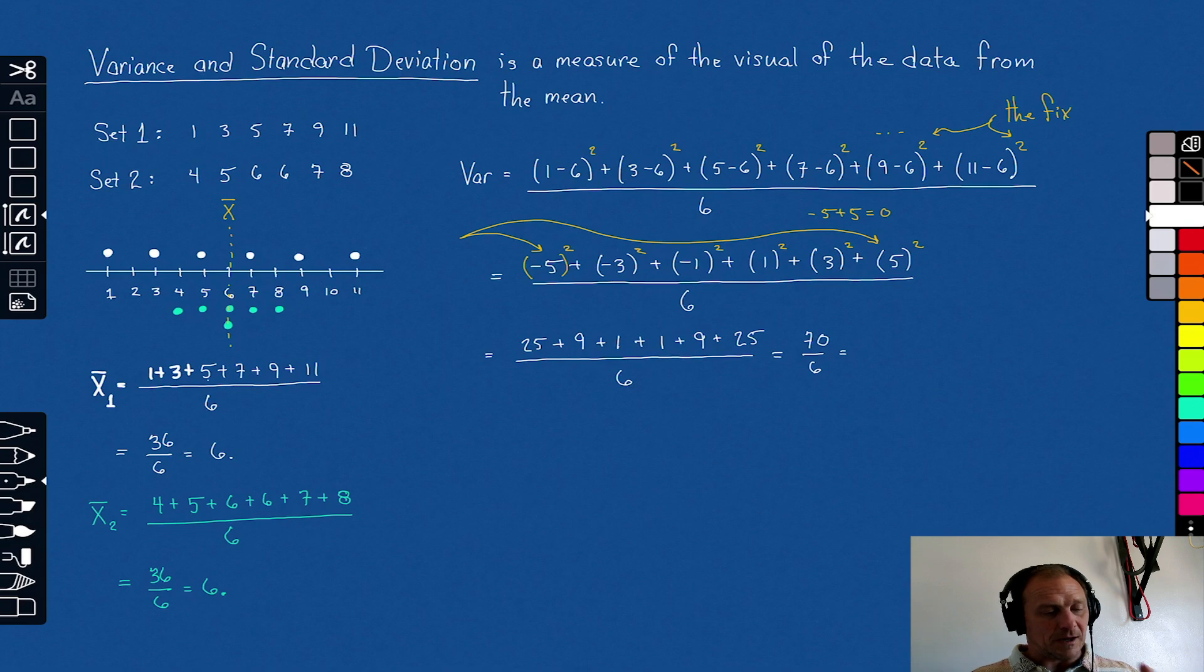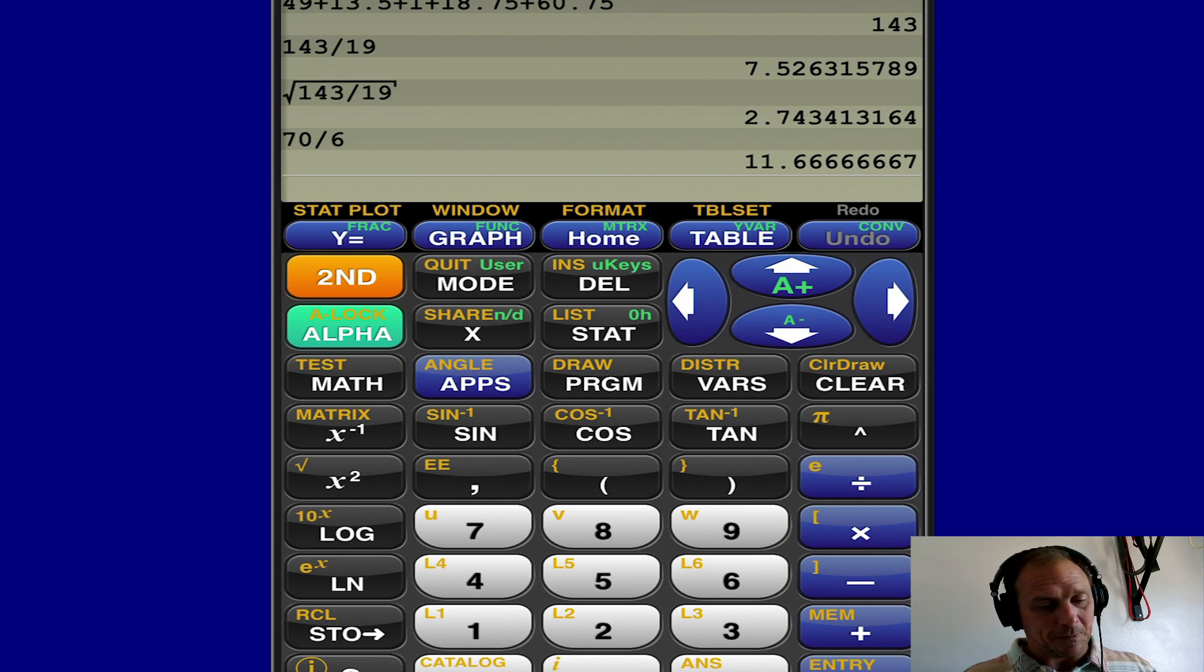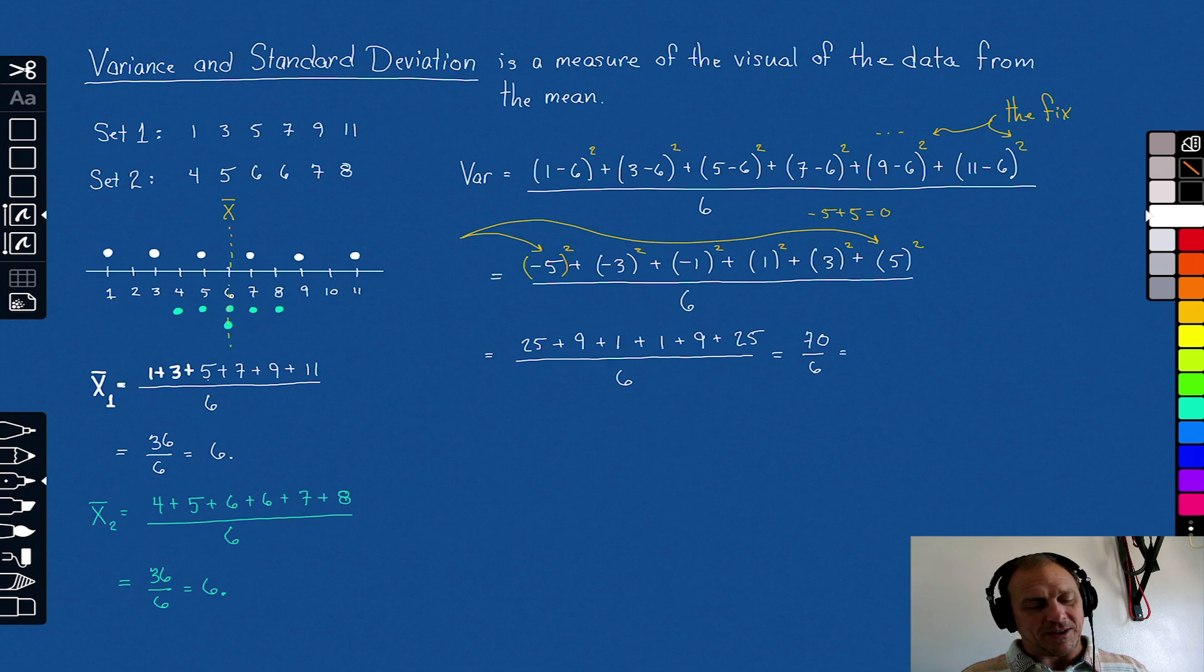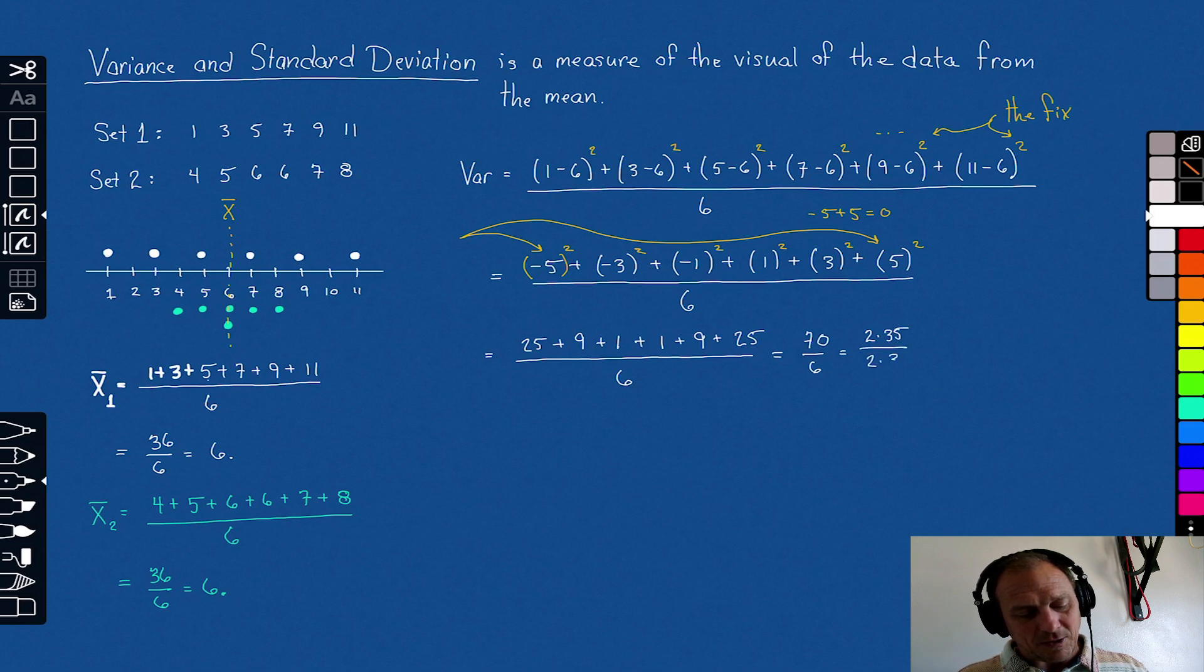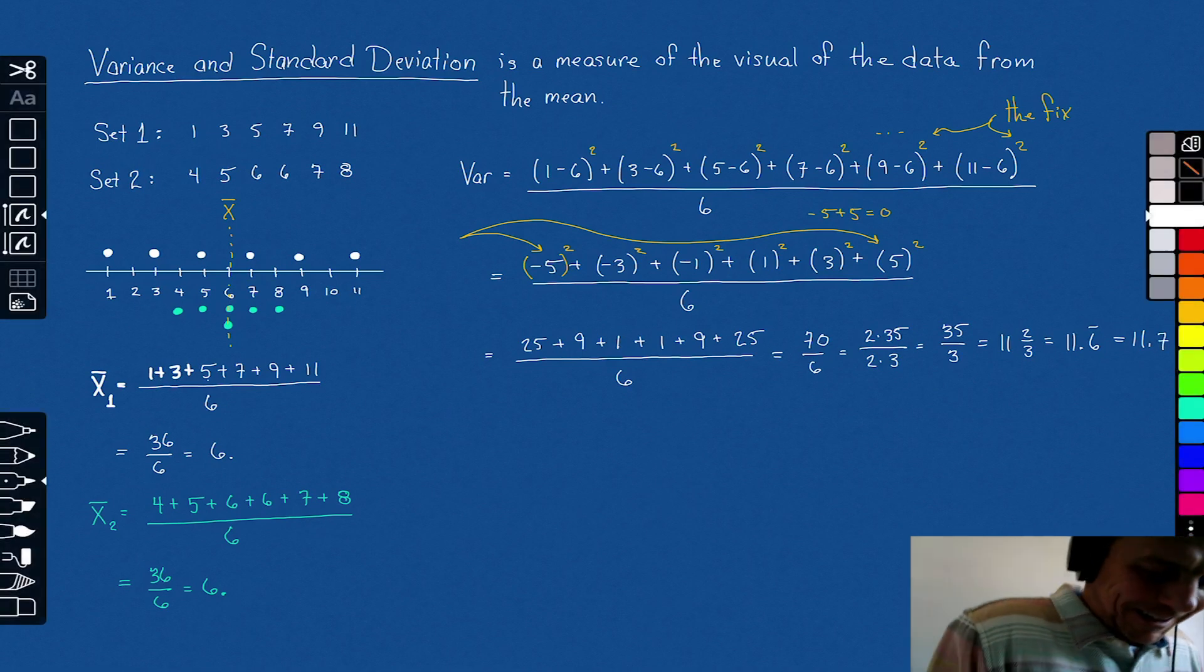Notice if you add the 25 and the 25, that's 50, plus the 9 and the 9 is 18, so that's 68, plus 2 more is 70. Divide it by 6. Let's take our 70, divide it by 6. There's our answer, 11 with a repeating 6. Notice that 70 is 2 times 35, 6 is 2 times 3. This reduces to 35 over 3. I'll just write it as 11 and 2 thirds, but you could also write as 11.6 repeating or we should round it to 11.7.